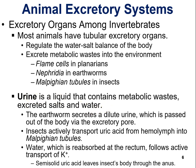Urine is a liquid that contains metabolic waste, excreted salts, and water. The earthworm secretes a dilute urine that passes out of the body via an excretory pore. Insects actively transport uric acid from the hemolymph into Malpighian tubules, which then excrete it out.